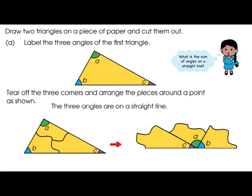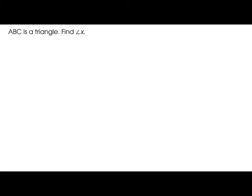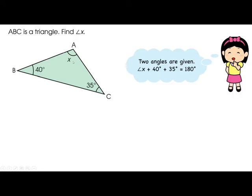Let's say A, B, C is a triangle and we have to find angle X. This is the triangle and X is unknown. Two angles are given, so we have to add 40 and 35. Since the sum of all angles in a triangle is 180 degrees, we subtract: 180 degrees minus 40 degrees minus 35 degrees. You will get 105 degrees.